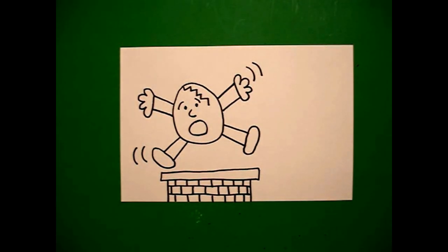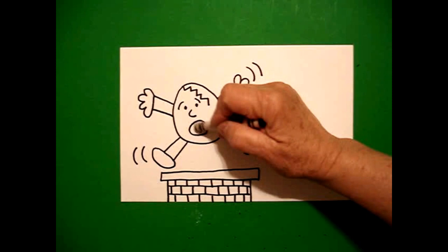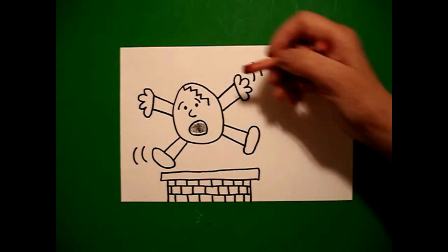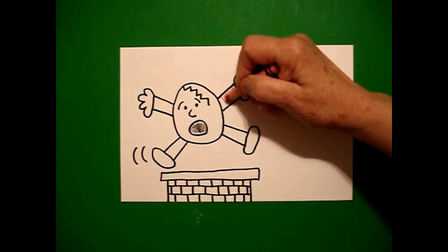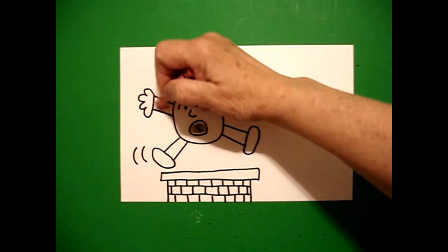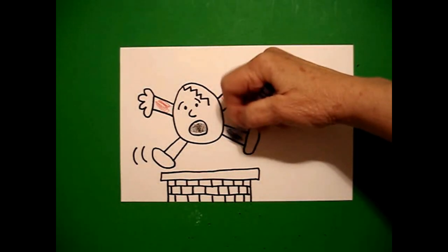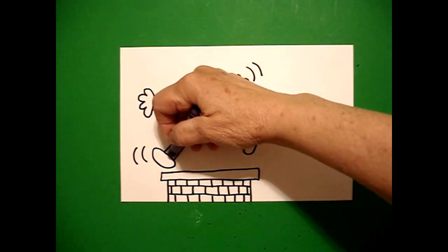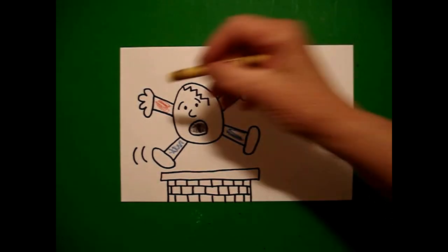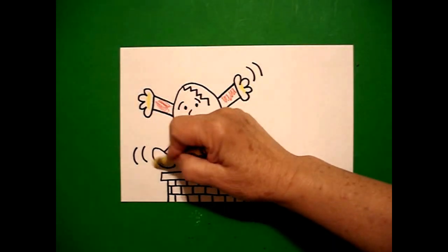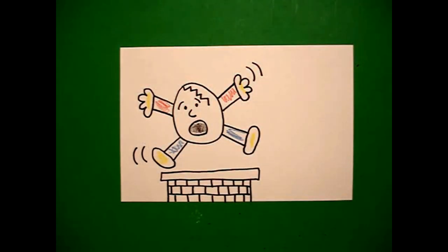Okay, Humpty is pretty easy to color in. The first thing I'm going to do is color in his mouth black so it looks like he's screaming. Then I'm going to use my primary colors and I'm going to do his arms red. I'm going to do his legs blue. And I'm going to do his hands yellow and his feet yellow also, kind of like a yoke.